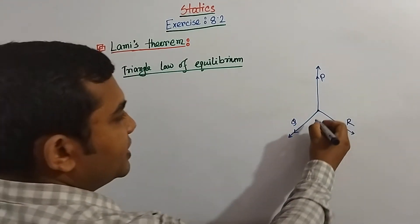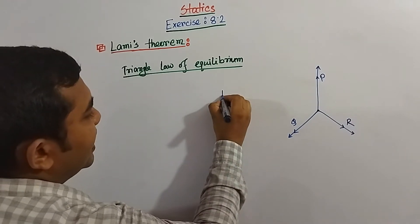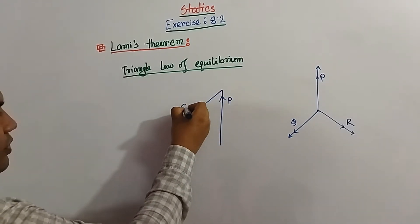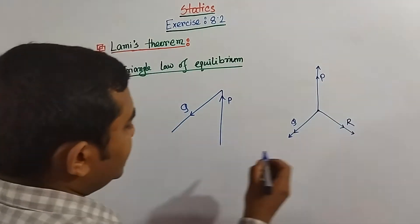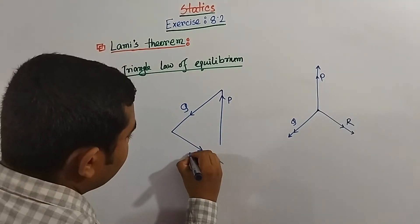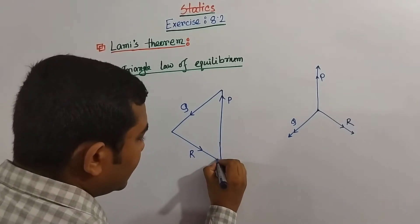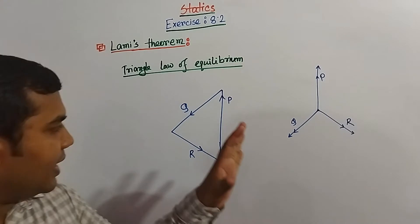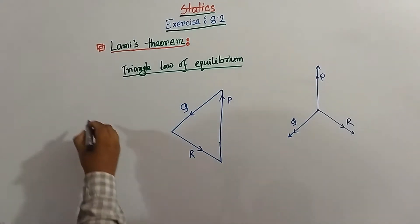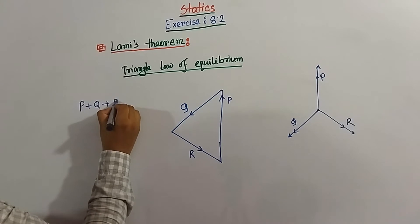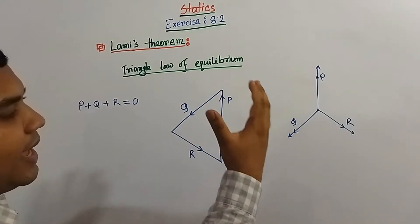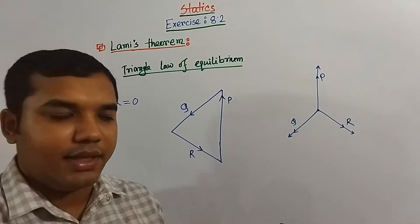The P force is working this way, Q has been working this way, and R force is here — the R force has been working this way. Then we get a triangle. This actually looks like a triangle. And according to the triangle's law of equilibrium, we can say that P plus Q plus R is equal to 0. That means the sum of the 3 forces is equal to 0. Since all of these represent direction, this is a vector component, so it should be vector P plus vector Q plus vector R.